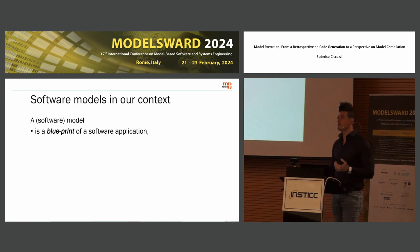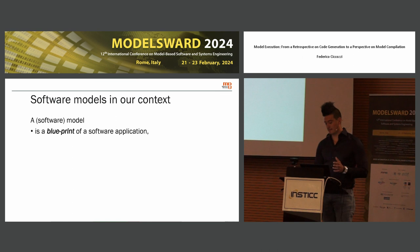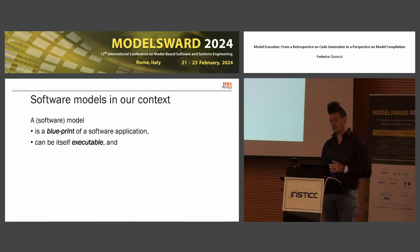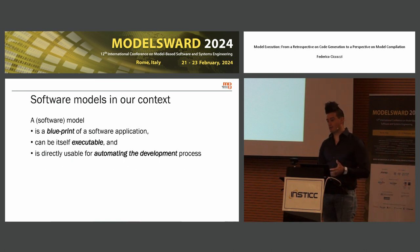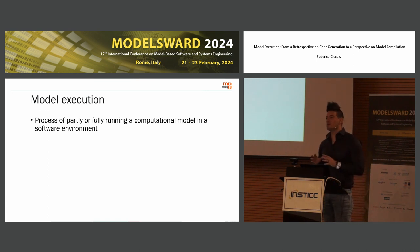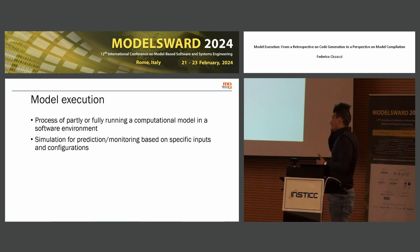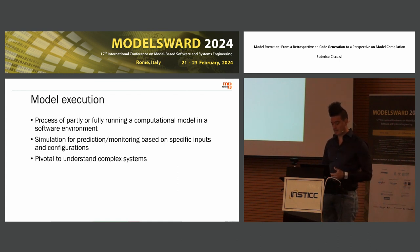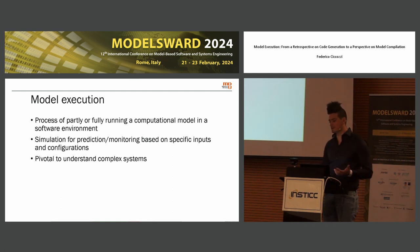When I talk about a software model — in general, the model in this talk — I mean a blueprint of a software application, something that can be itself executable, and that is directly usable for automating the development process of software. When I say model execution, I mean a process of partly or fully running a computational model, a model that can be executed in a software environment. This can be done for different purposes, for instance for simulation, both for prediction and monitoring of a system based on specific inputs and configurations, and in general, model execution is very important to understand and manage complex systems.